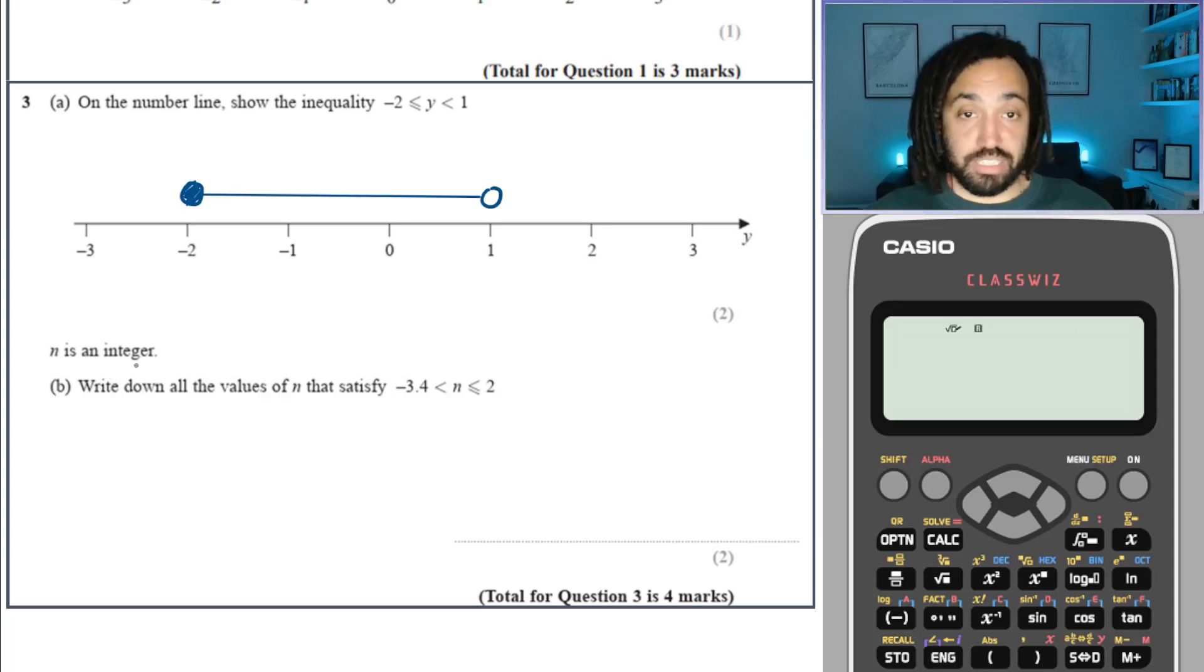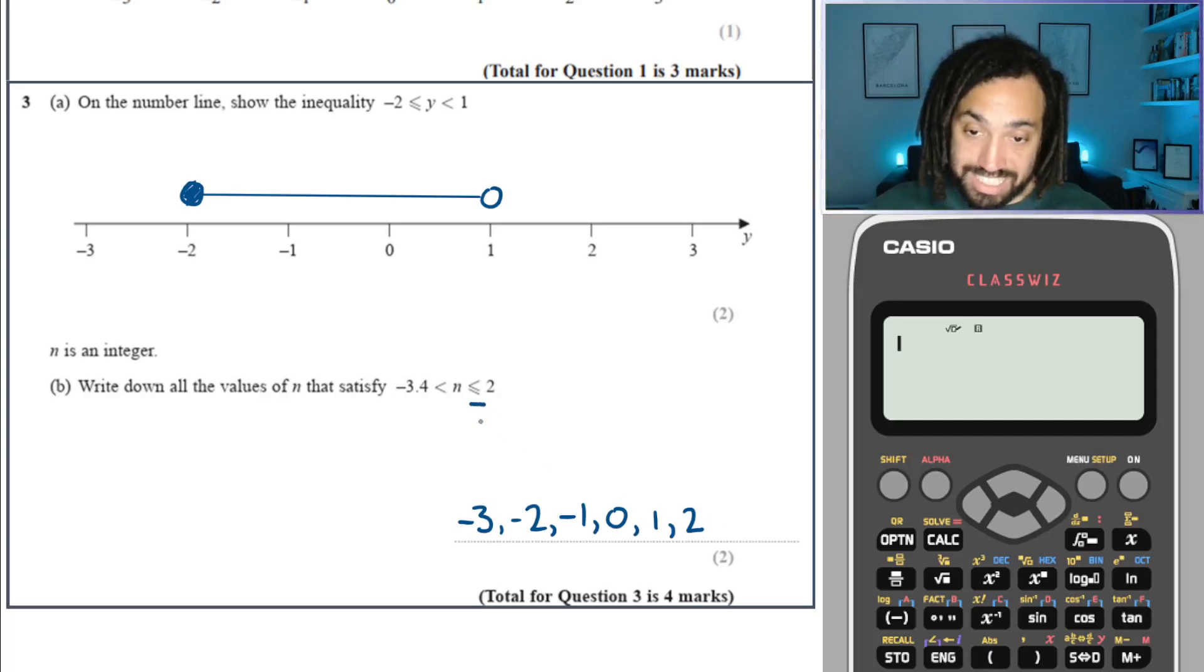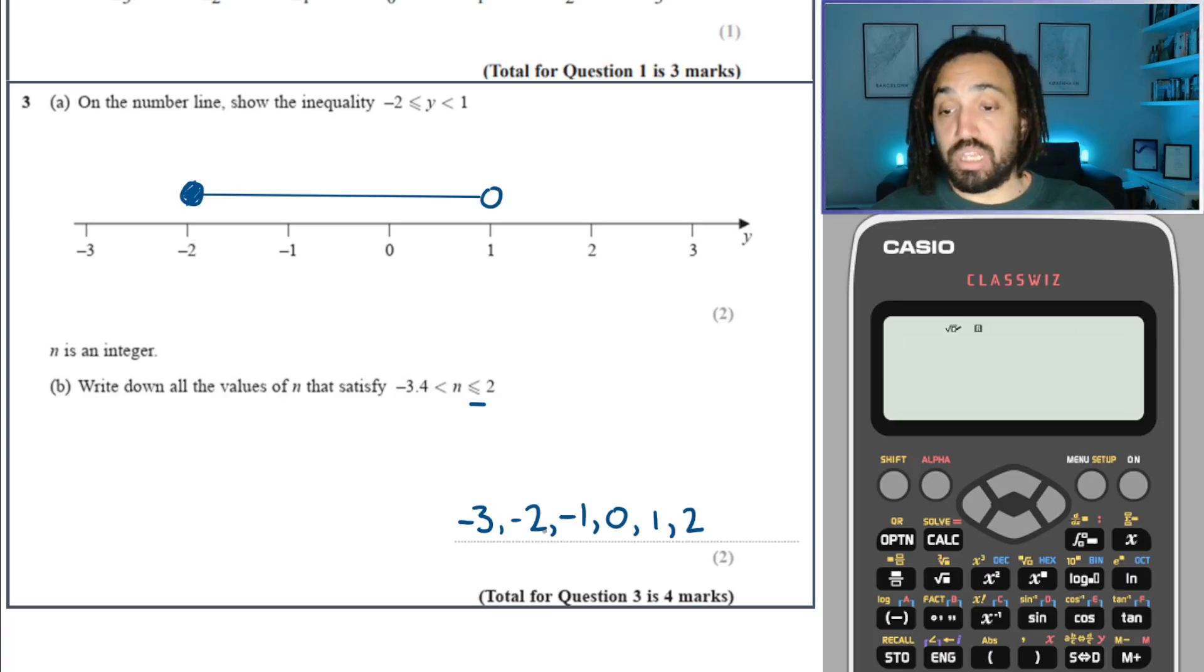Write down all the values of n that satisfy this. So n is an integer, so it's in between minus 3 and a half and 2, not minus 3 and a half, minus 3.4. So going up from minus 3.4 the next integer we hit is minus 3, so that's all good, it could be in there. It could be that one minus 2, minus 1, 0, 1, it could be that one 2 as well because it says that it is equal to 2 or possibly equal to 2. Anymore that will be out of the range so that is all good.